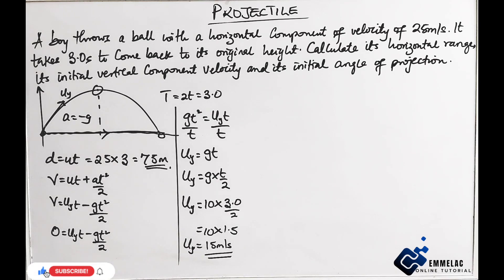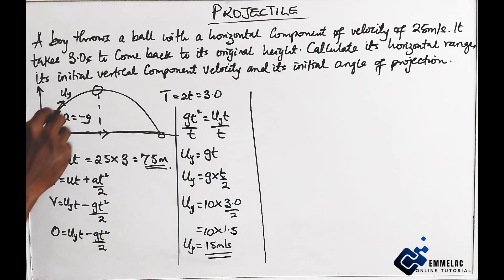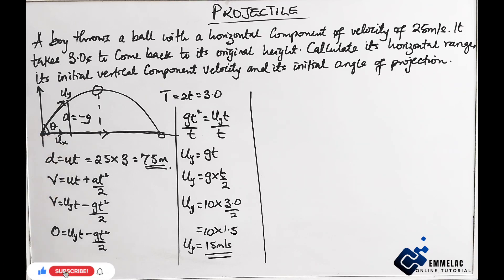Alright, so that is it. Then next, here we have the angle of projection. Now zoom, this is it. The horizontal component is 25, while the vertical component is 15. So taking this angle here.